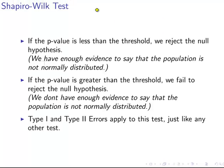If the p-value is less than the threshold, we reject the null hypothesis. For example, if we get a p-value of 0.0125, we reject the null and say we have enough evidence to conclude the population is not normally distributed. Remember, hypothesis testing is really about evidence — it's not about what is definitively true or false. If the p-value is greater than the threshold, we fail to reject the null hypothesis.